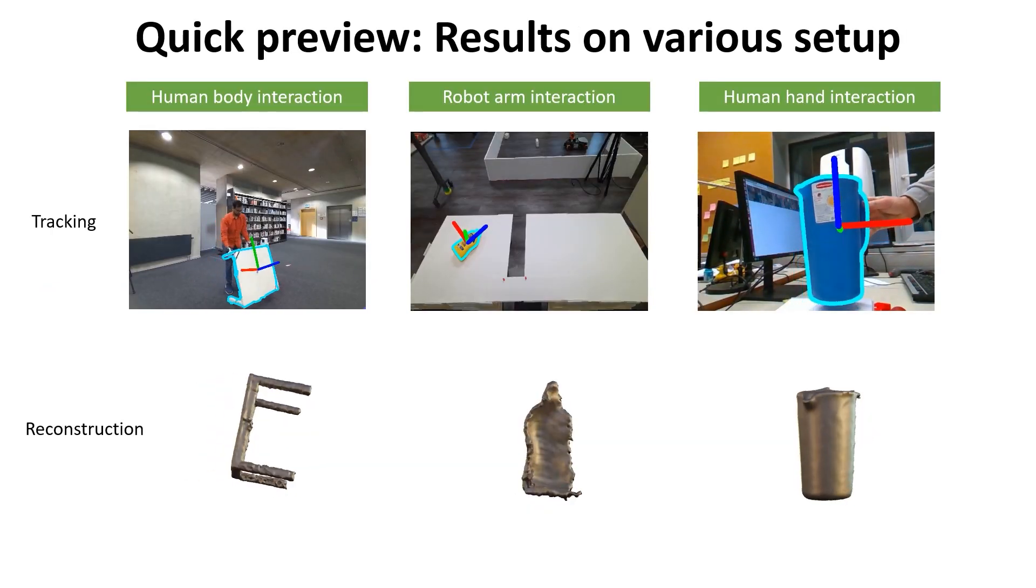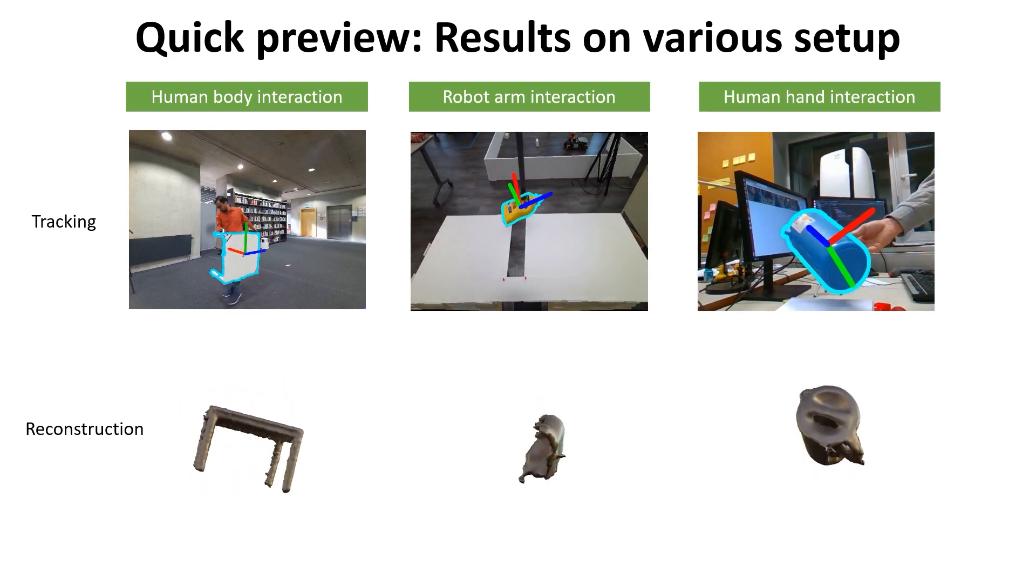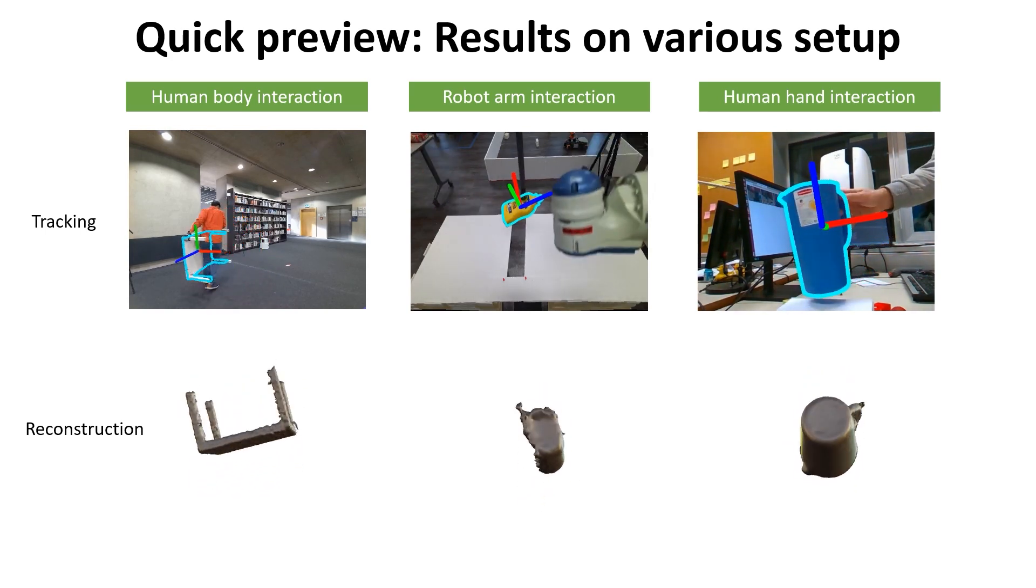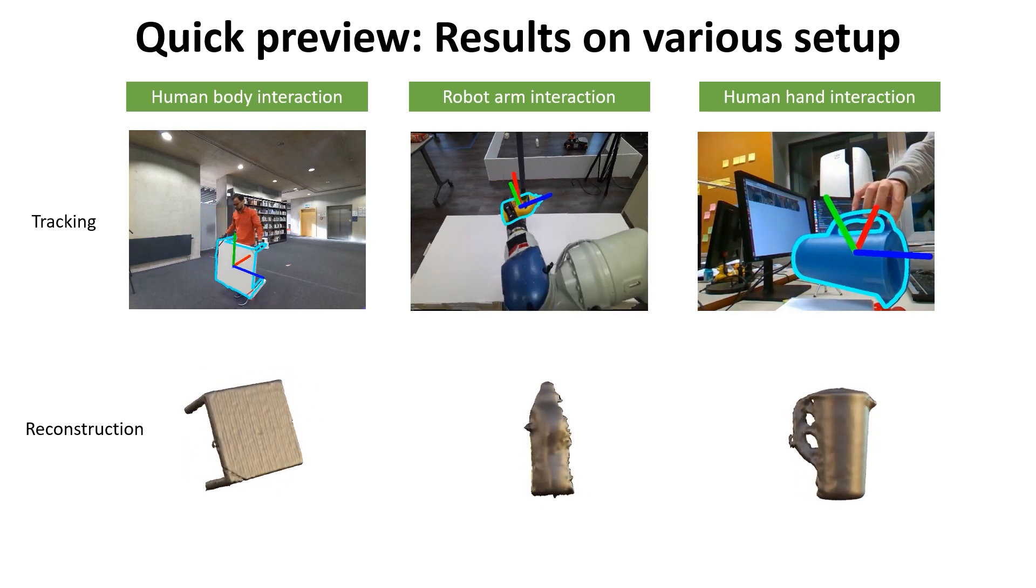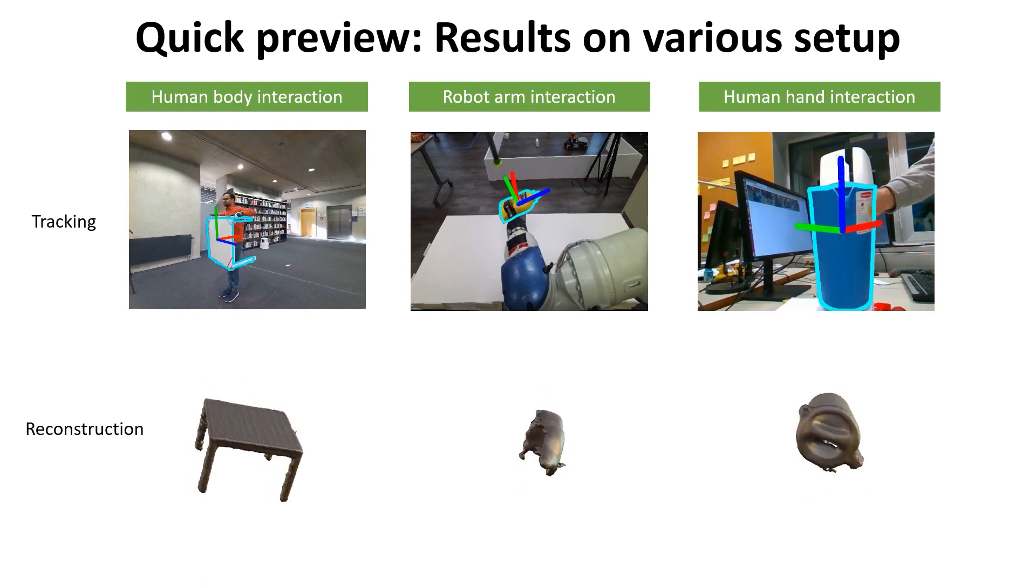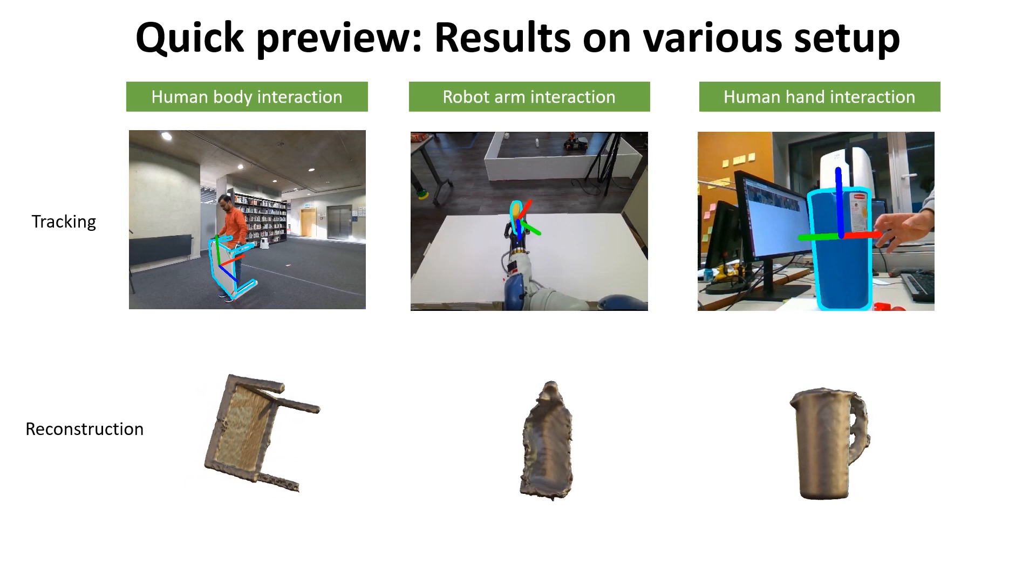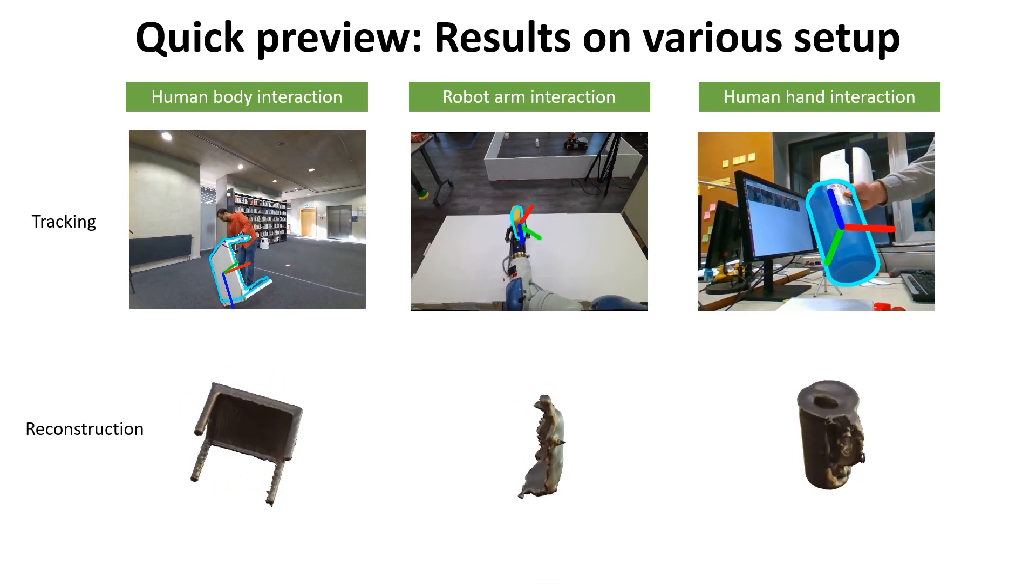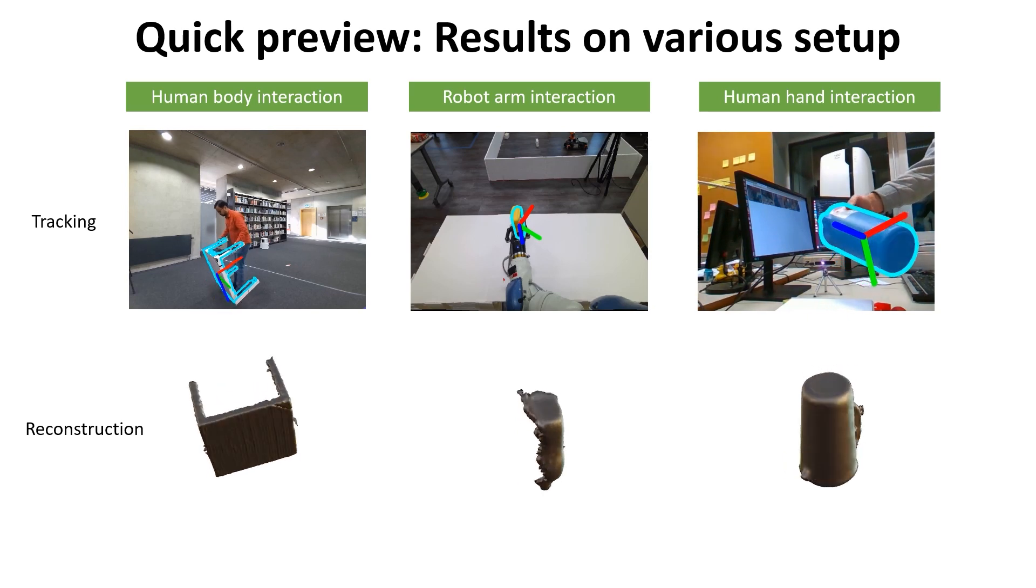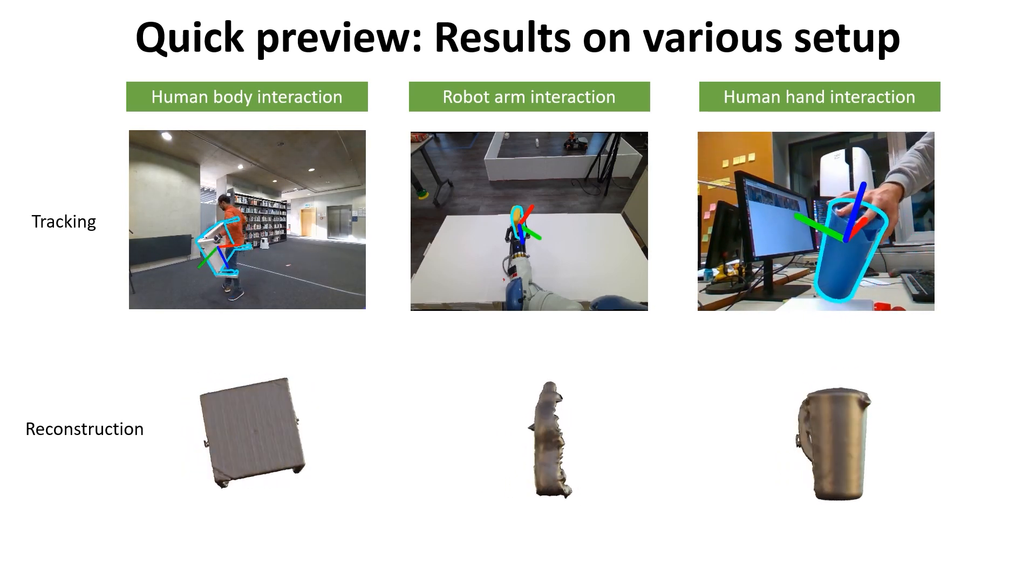Here is a quick preview of the results on various setups including human-body interaction, robot-arm interaction, and human-hand interactions. Challenges such as severe occlusions, fast motion, far sensing range, textureless and symmetric objects frequently appear. However, our method is able to stably track the 6-DoF pose of the object throughout the video without any reinitialization, and simultaneously performs high-quality 3D reconstruction for all visible faces.